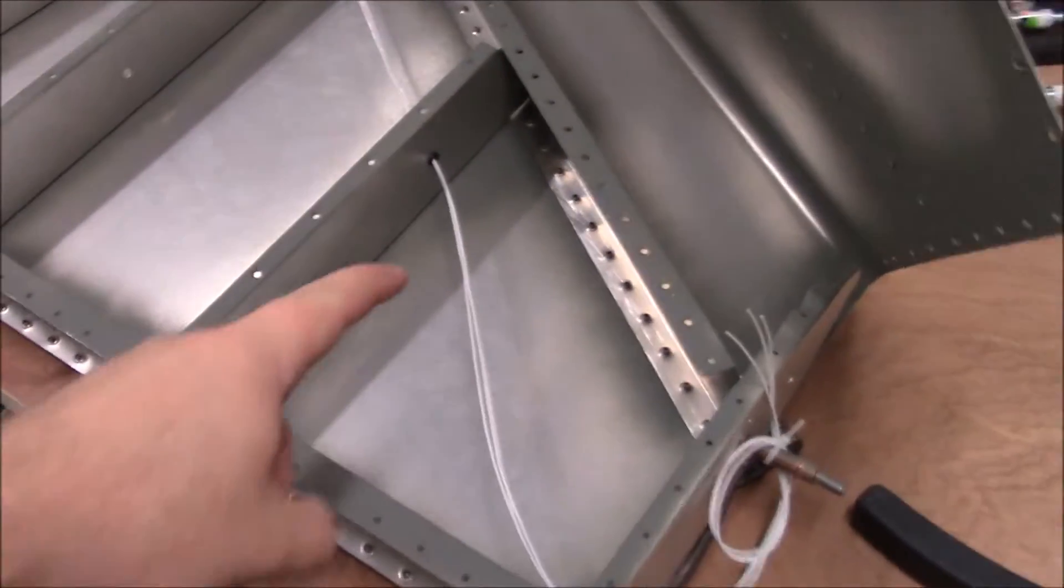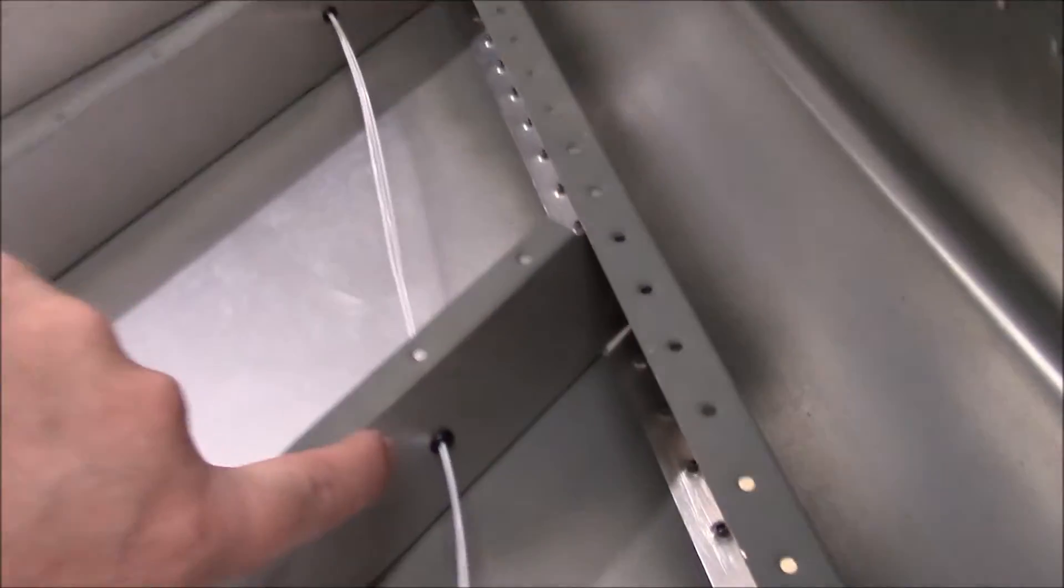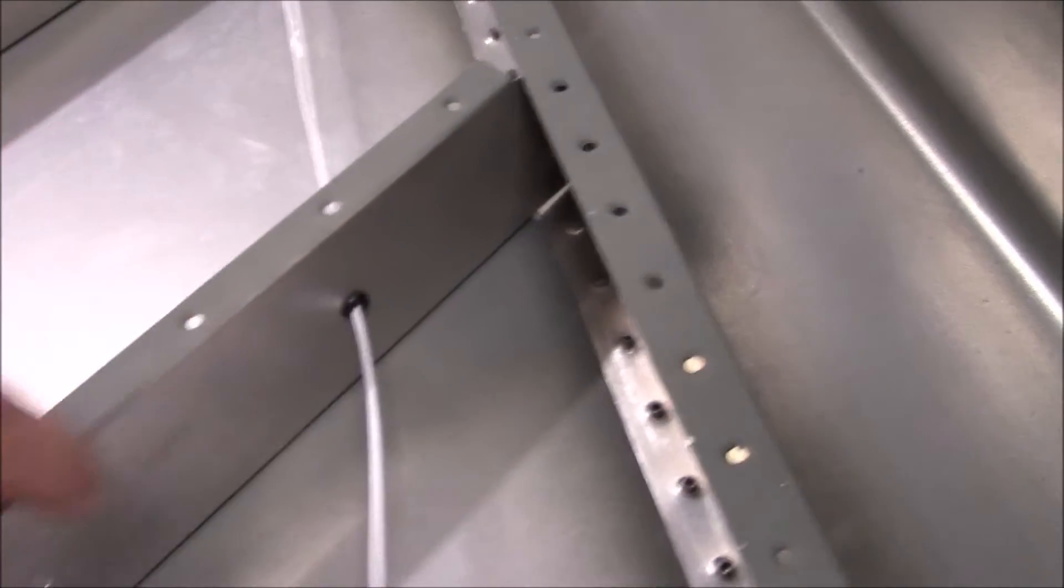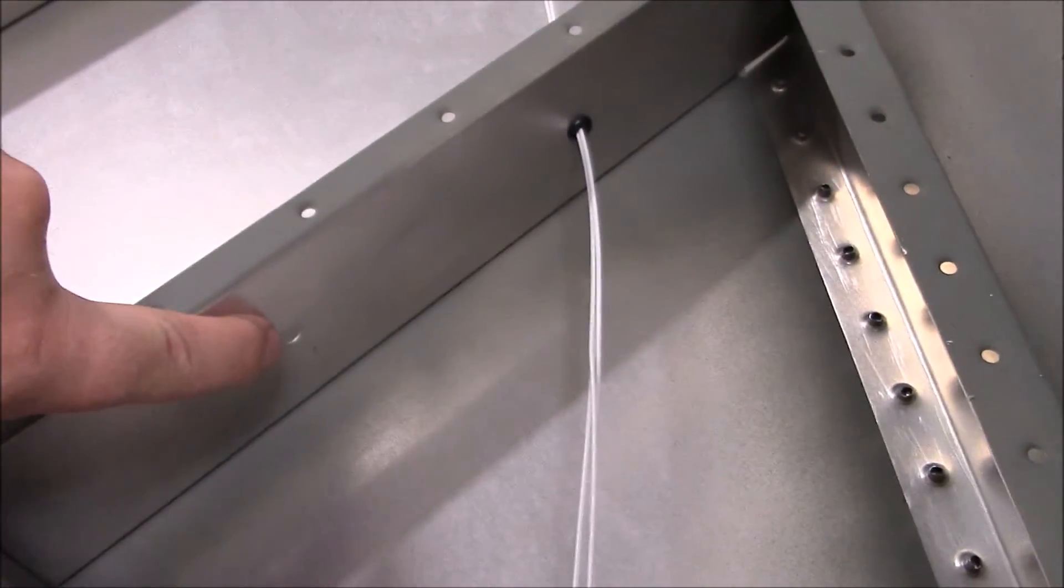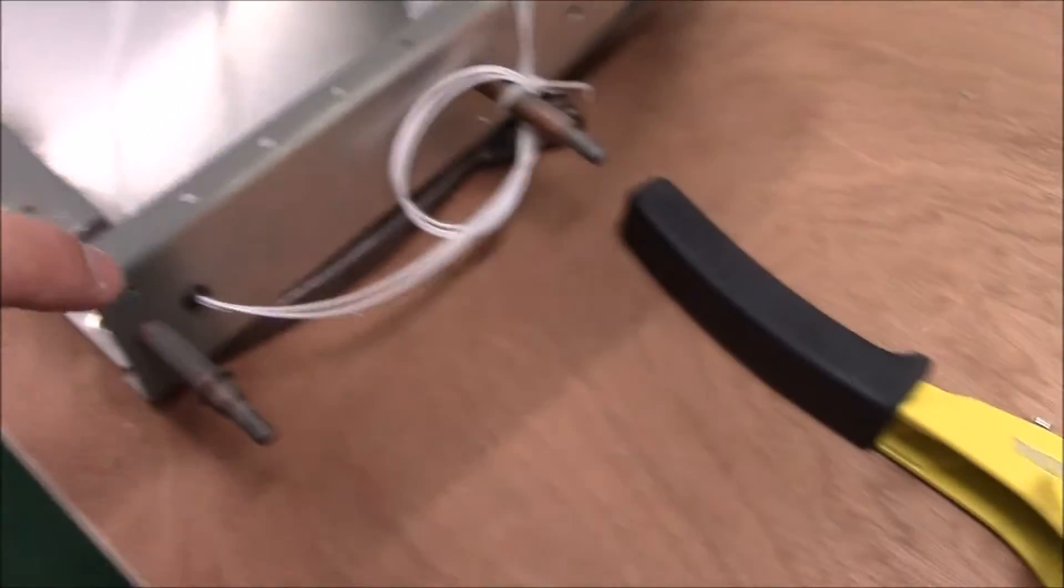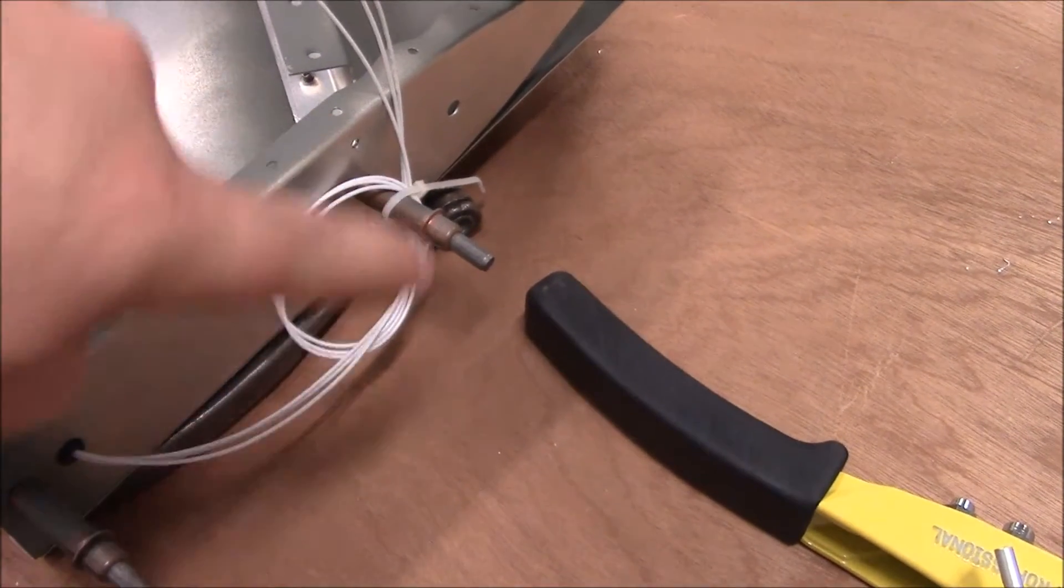So I ran three strands through these rubber grommets. You can see here about 50 of them. They go through all the tooling holes that are naturally in the aluminum. I have them all the way to here and I zip tied them to the Cleco here.